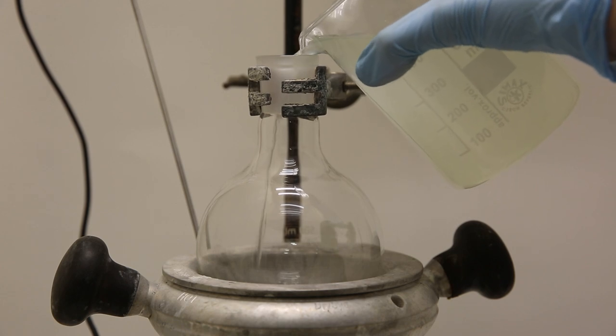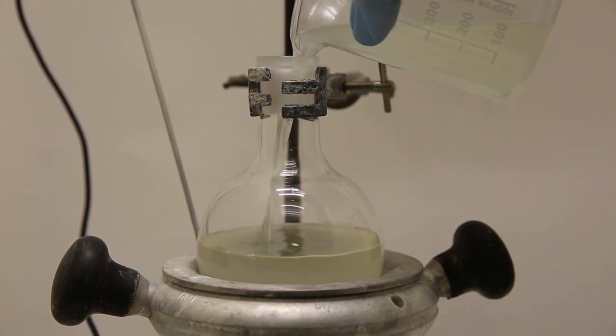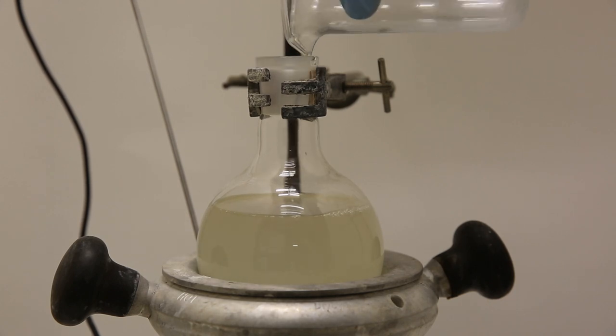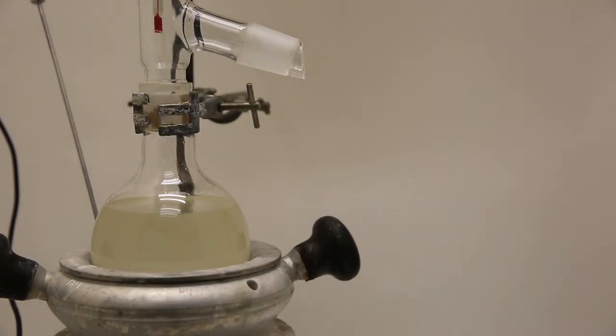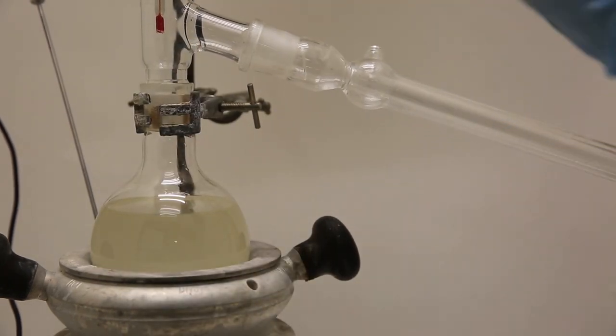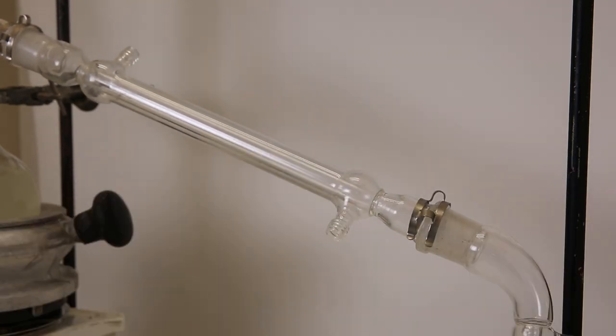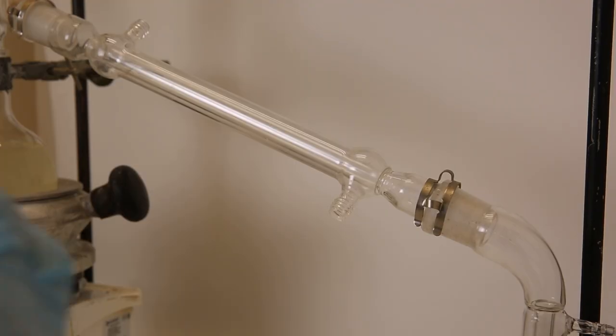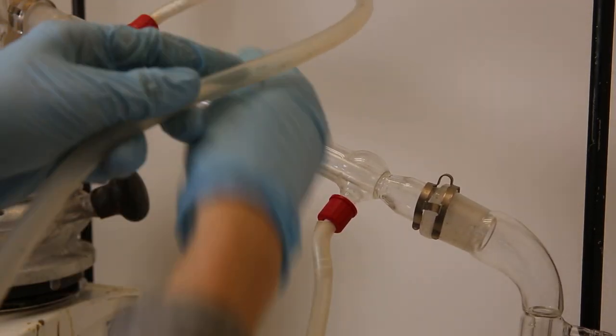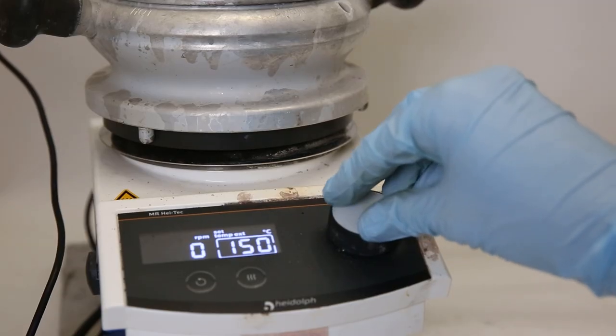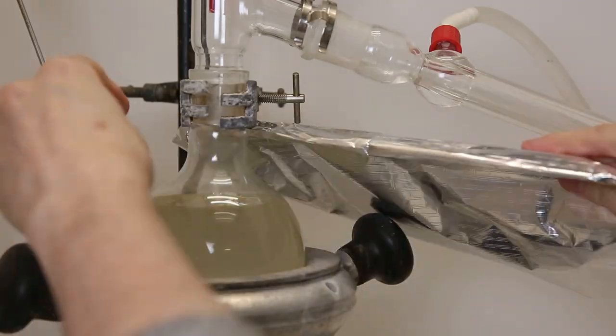So after I have washed all of my biodiesel, I need to remove the toluene, so I simply set it up for distillation so I can recover some of my toluene. I set a high temperature to make sure the toluene will boil, and then I insulate the flask with some aluminum foil.